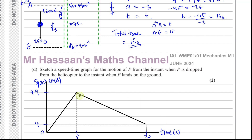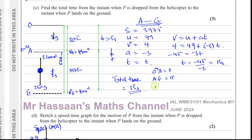So the speed-time graph shows: a straight line from (0, 0) rising to (5, 49), then a straight line descending from (5, 49) to (20, 4). That completes part D and concludes the question.